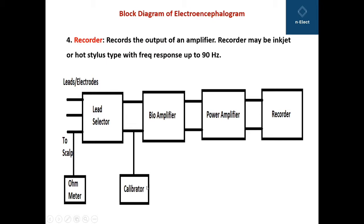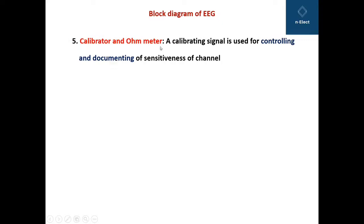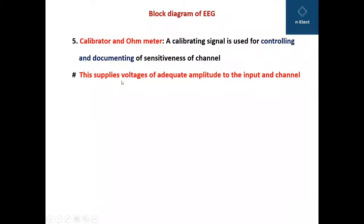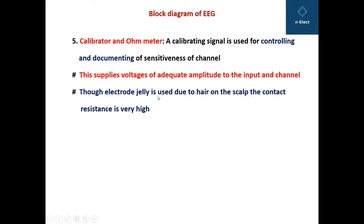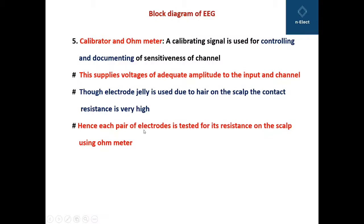The calibrator and ohmmeter play a role in accuracy. A calibrating signal is used for controlling and documenting the sensitivity of the channel, supplying voltage of adequate amplitude to the input channel. Although electrode jelly is used, due to hair on the scalp the contact resistance is very high, and therefore each pair of electrodes is tested for its resistance on the scalp using an ohmmeter.